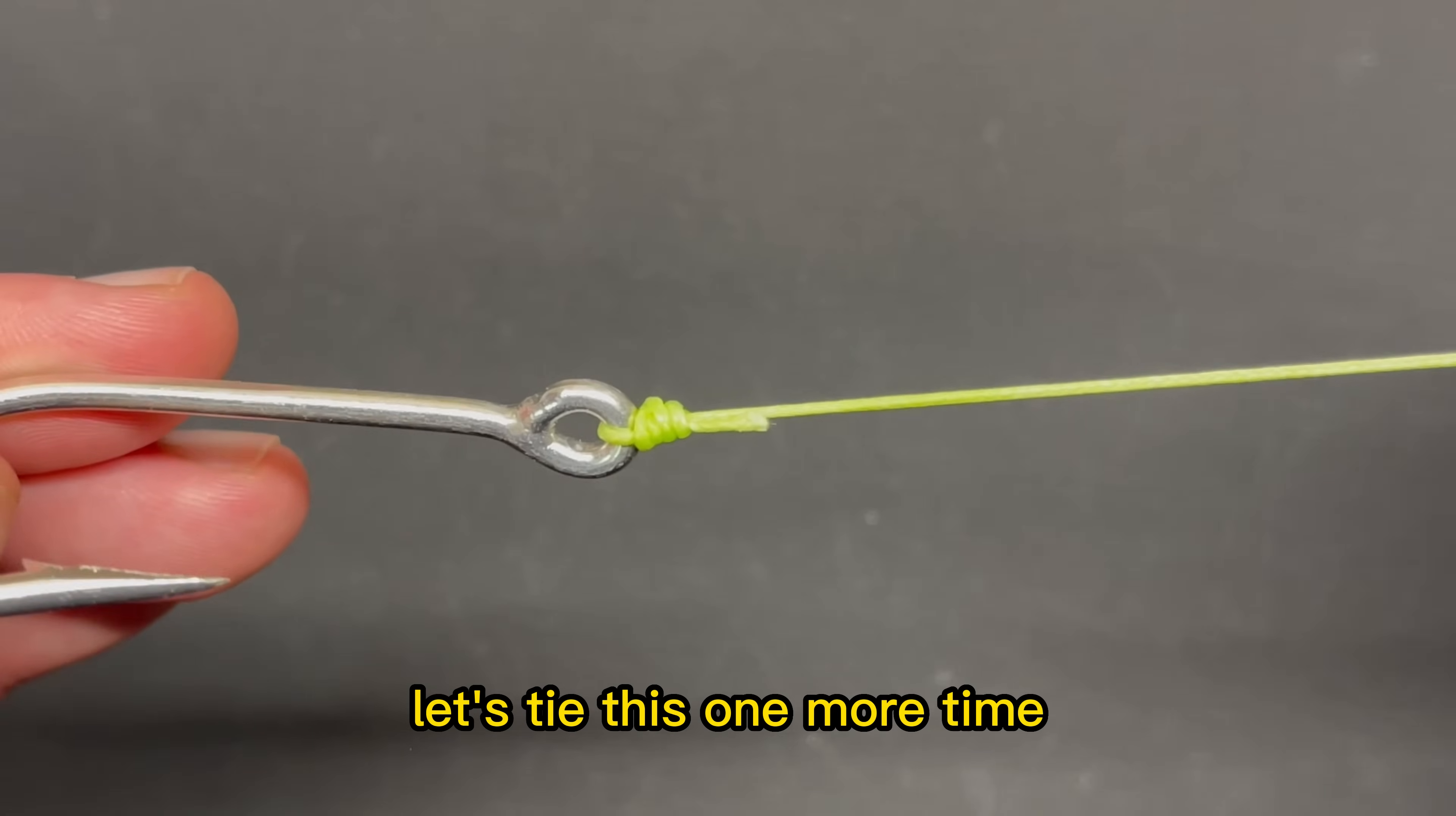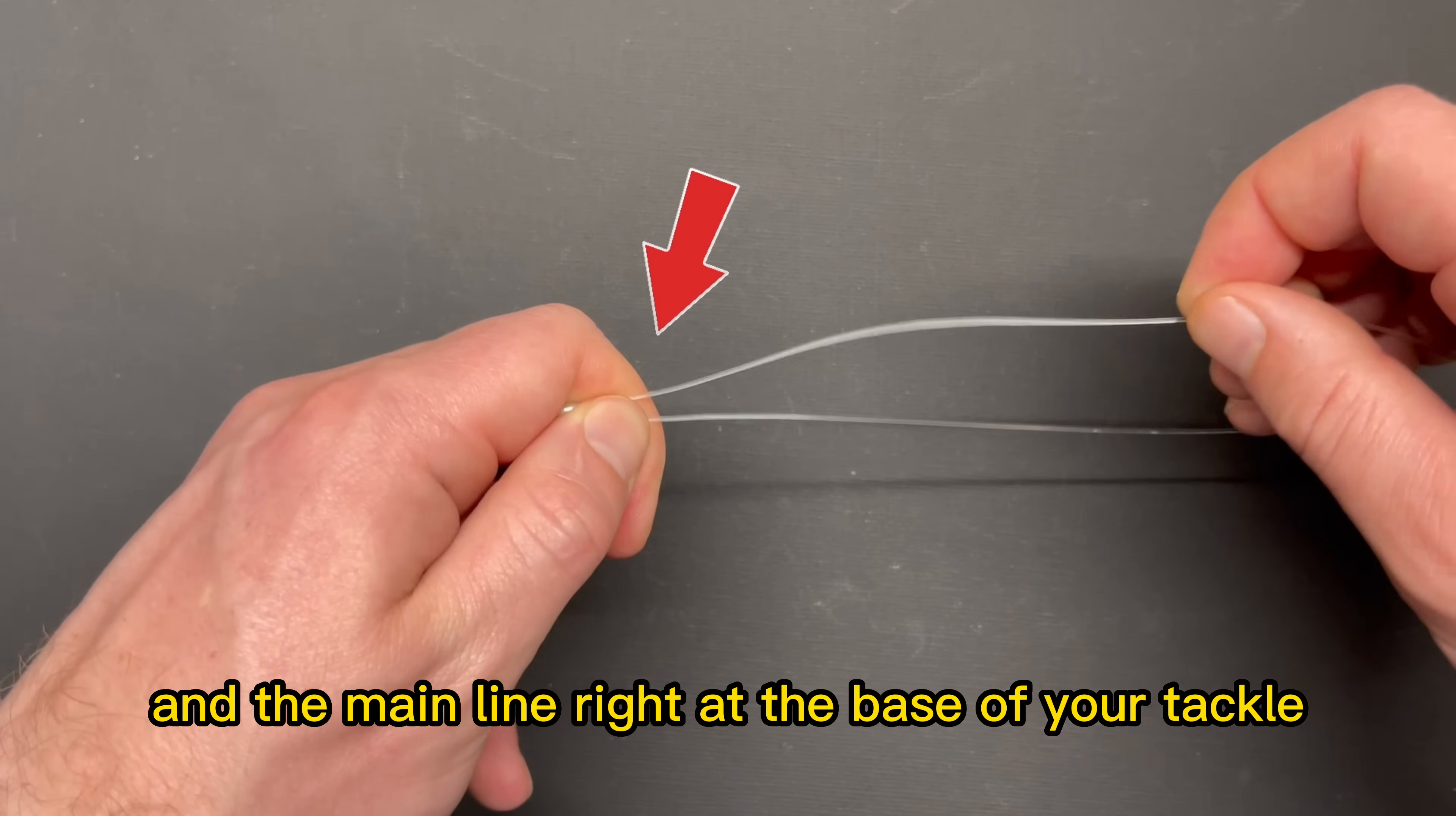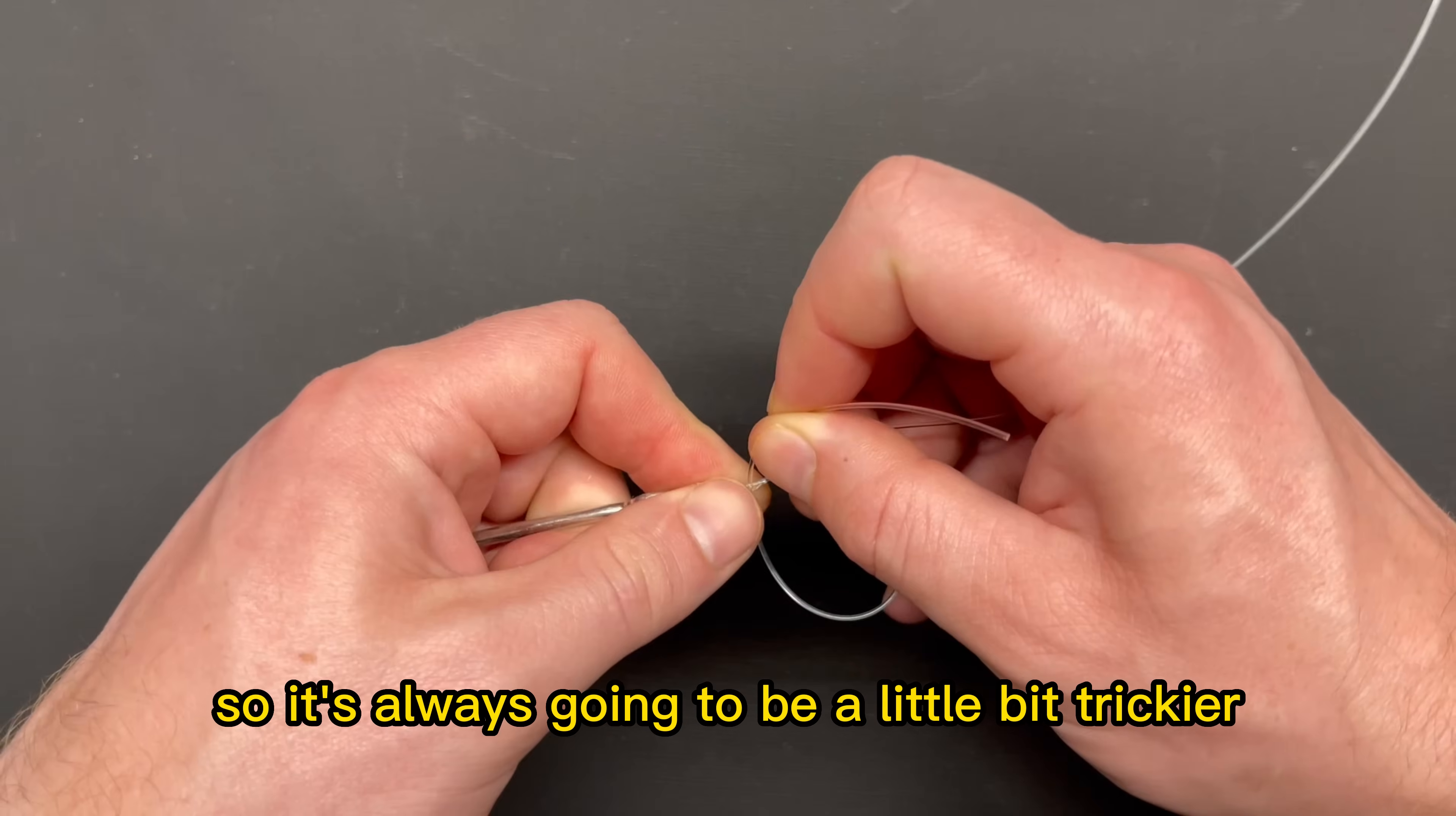Okay, let's tie this one more time. So this is 60 pound test. You're going to start with running your line through the eye of your tackle. Give yourself a decent amount of tag end and pinch them together, the tag end and the main line, right at the base of your tackle. Obviously monofilament and fluorocarbon has more memory than braid does, so it's always going to be a little bit trickier.